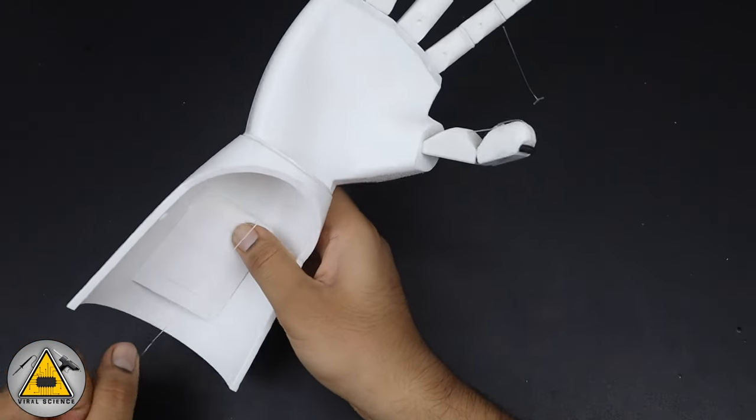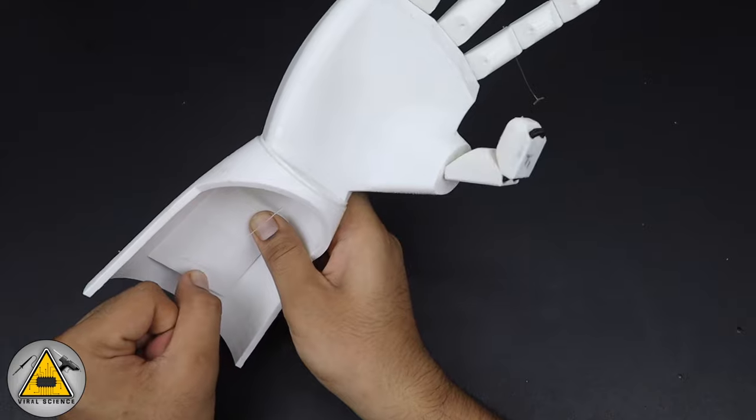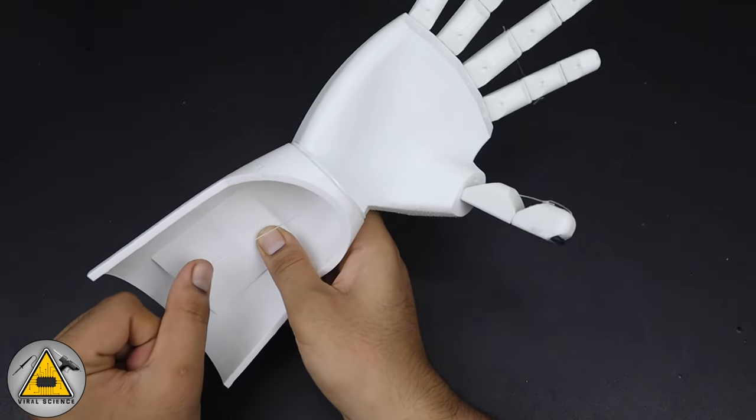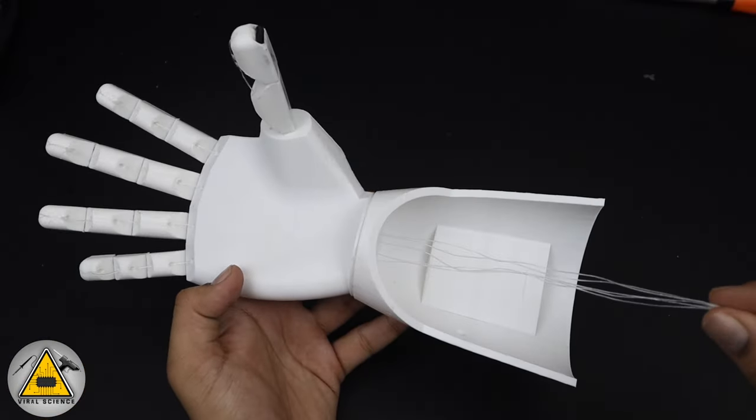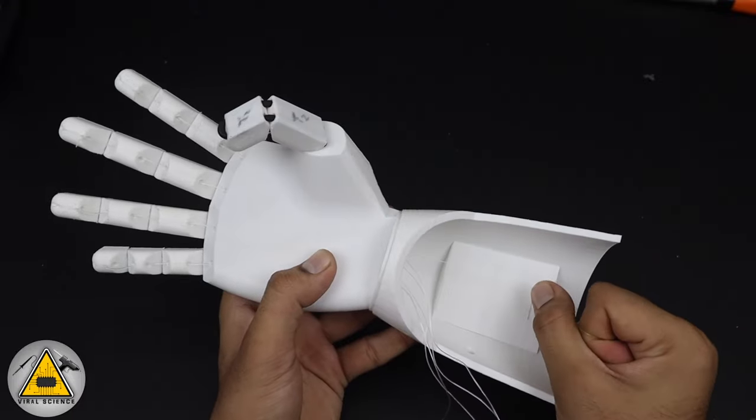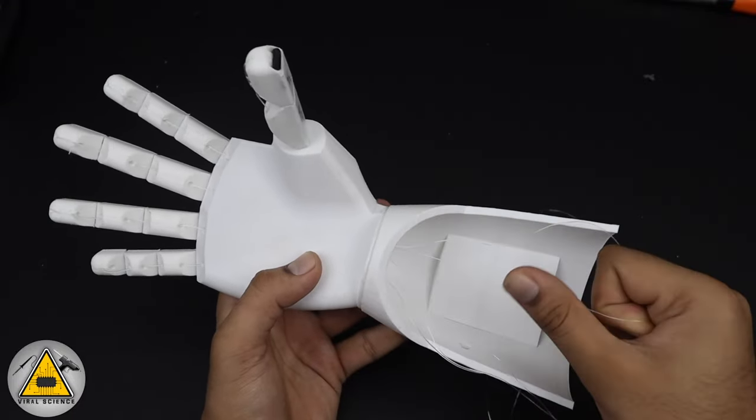So now as you can see, when I pull the string you can see the movement in the thumb. So this will be done by the servo motors. Similarly I have connected strings to all the five fingers and you can see it's working very smoothly and perfectly.